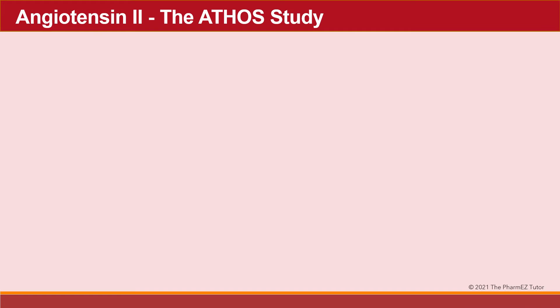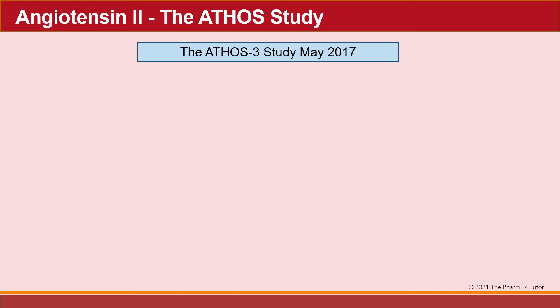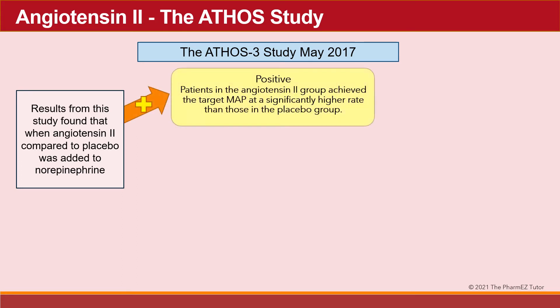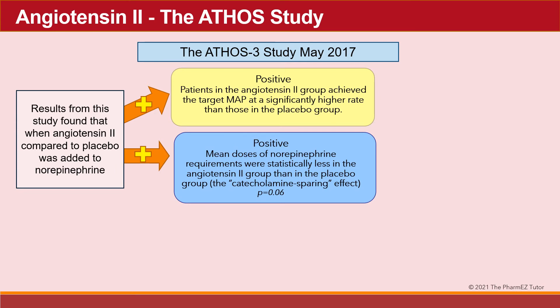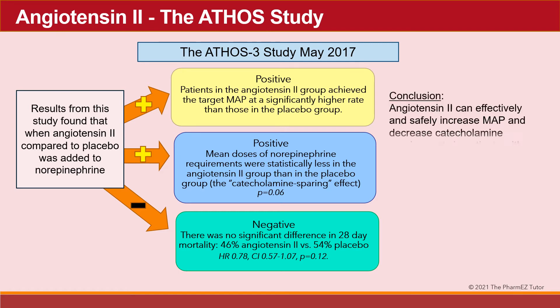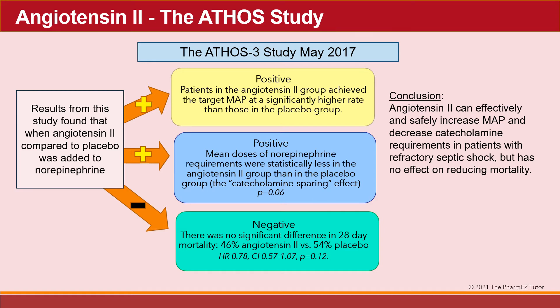The main trial involving angiotensin II was the ATHOS-3 study, published in May 2017. Angiotensin II was added to norepinephrine, and results showed that patients in the angiotensin II group achieved the target MAP at a significantly higher rate than placebo, and also required less norepinephrine — the catecholamine-sparing effect. Unfortunately, there was no significant difference in 28-day mortality (p-value 0.12). These results were very similar to the VASST study. The authors concluded angiotensin II can effectively and safely increase MAP and decrease catecholamine requirements in refractory septic shock, but has no effect on reducing mortality.